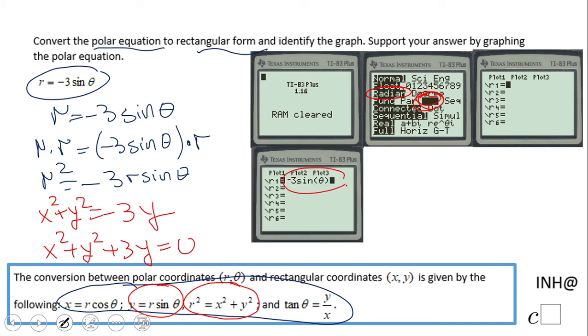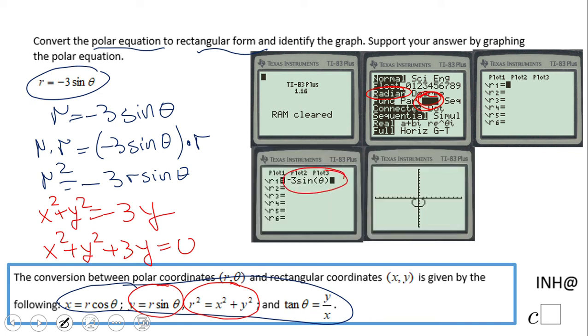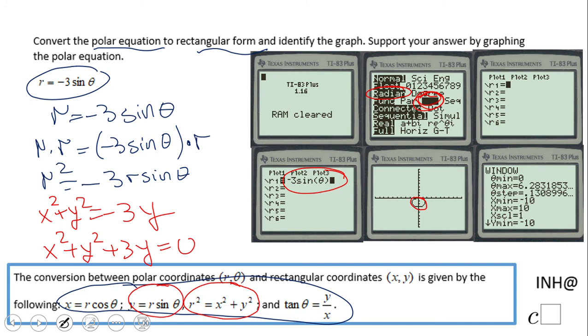I type in our equation, and let's see what we get. We get a circle if you notice right here. One more thing: if you do not see this picture, you may want to look to your window and adjust it if that is needed.